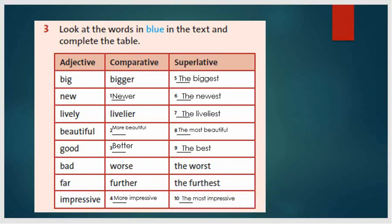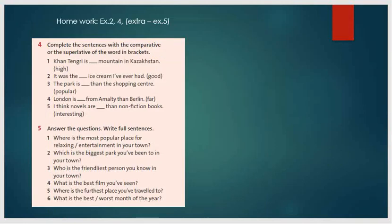Okay, we have finished exercise number three. And the next exercise, number four, is your homework. Here you should change your adjectives into comparative or superlative forms. And exercise number five is your extra homework. So let's repeat: homework is exercise number two and four, and extra homework is exercise number five.